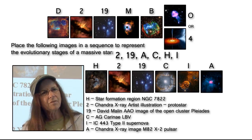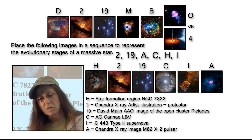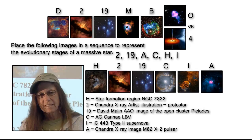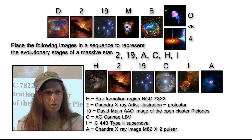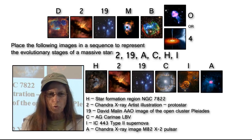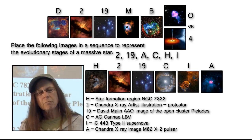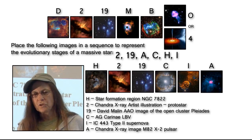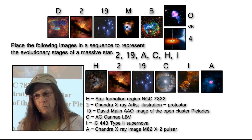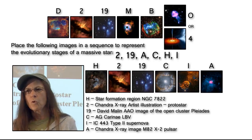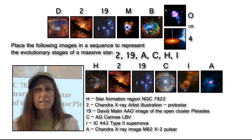As students progress more and more, they can actually put together the specific pulsar that comes from the actual type 2 supernova — they can get more and more technical, as in depth as they want. The more they play around with these images and sequencing — deciding whether this one fits better than that one — the more they're going to learn and understand the process.